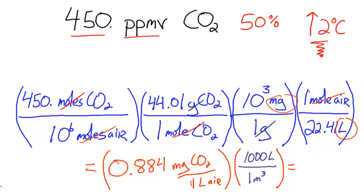And this gives me overall 884 milligrams of CO2 per cubic meter of air. Notice that I just kept track of my units to make sure that they canceled all the way across, starting with moles of CO2, followed by moles of air, grams of CO2, until I got my desired units of milligrams, and in this case, per meter cubed.